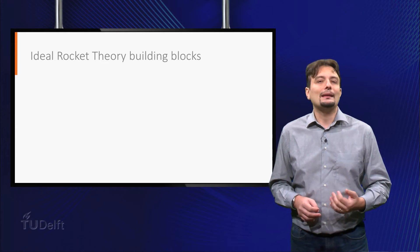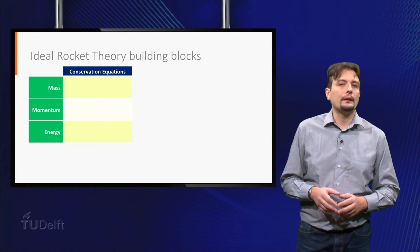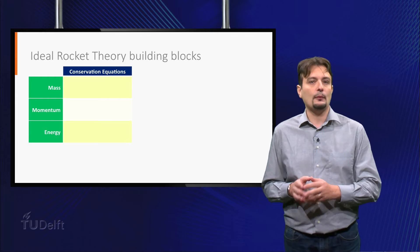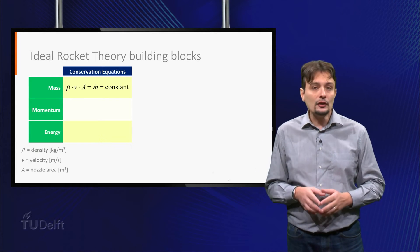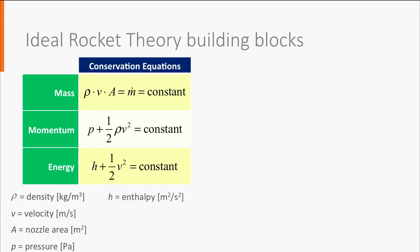Based on these assumptions, we can derive the building blocks used to find the ideal rocket theory equations. The first group of building blocks are the so-called conservation equations for mass, momentum and energy. Conservation of mass means that no mass is generated or lost within the nozzle, meaning that the mass flow rate shall remain constant everywhere in the nozzle. The mass flow rate can be written as gas density times velocity times nozzle area. Conservation of momentum means that the flow pressure, density and velocity are continuously linked to each other by means of the equation you see in the table. The conservation of energy implies a relationship between the flow enthalpy and velocity.